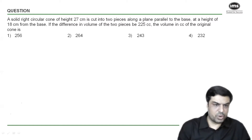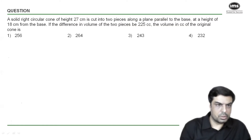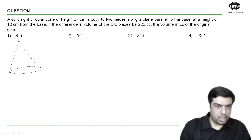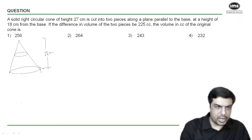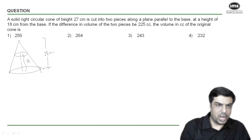Let's draw the diagram first to understand the problem. We've got a solid right circular cone and we are cutting a piece parallel to the base. The height of the larger cone is given as 27 centimeters, and the cut is made at a height of 18 centimeters from the base, which means the height of the smaller cone at the top is 27 minus 18, which is 9 centimeters.